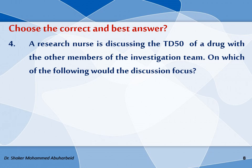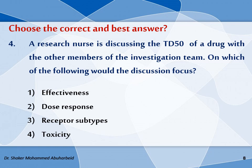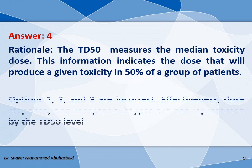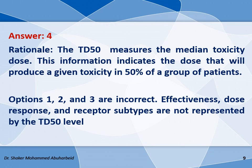Fourth question: A researcher is discussing the TD50 of a drug with other members of the investigation team. Which of the following would the discussion focus on — effectiveness, dose response, receptor subtypes, or toxicity? The correct answer is option four. TD50 measures the median toxicity dose — the dose that will produce a given toxicity in 50% of a group of patients. Effectiveness, dose response, and receptor subtypes are not represented by the TD50 label.